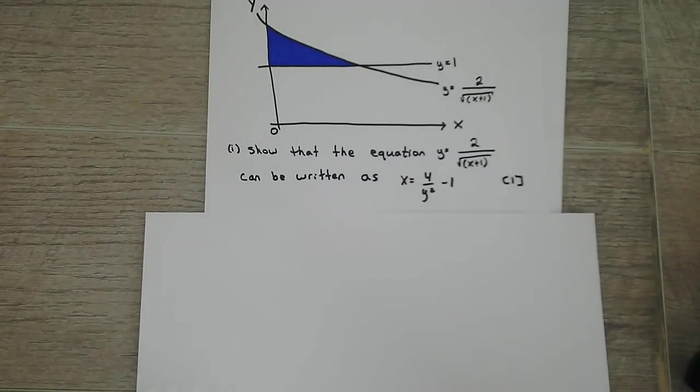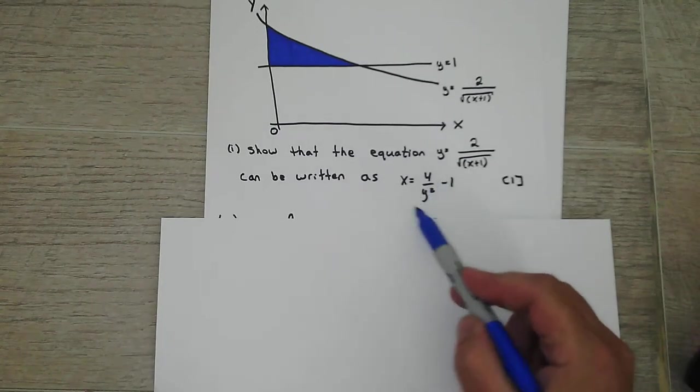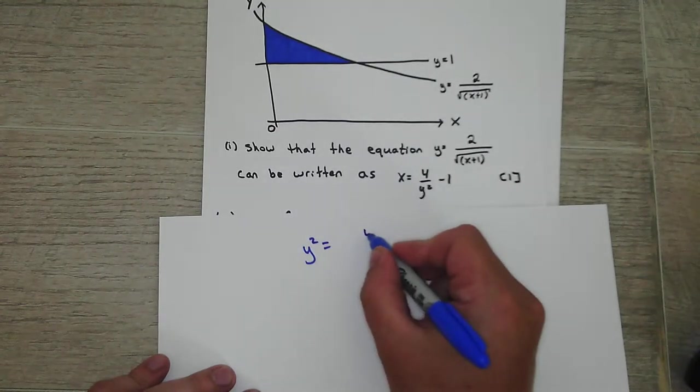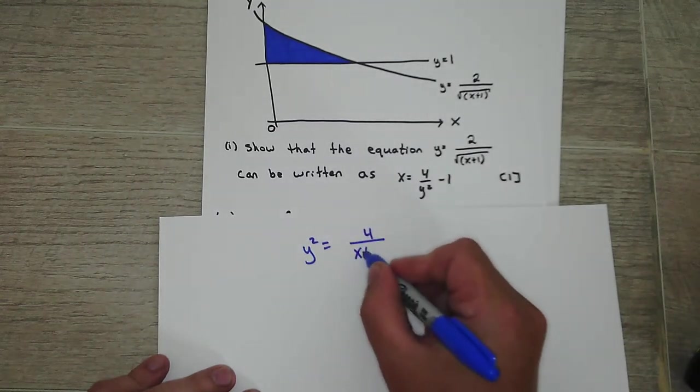Okay, so show that this equation can be written as - so basically I see a y squared there. So basically if I just square both sides, that gets rid of the square root on the bottom, I get that.